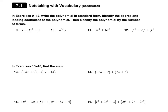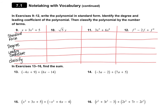If we take a look at exercises nine through 12, they want us to do many different things: first write it in standard form, then identify the degree, then the leading coefficient, and classify it. There's a lot going on, so my suggestion is to make a grid to help organize your answers.